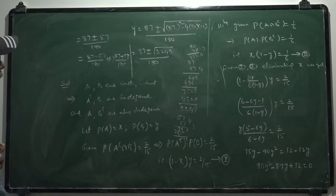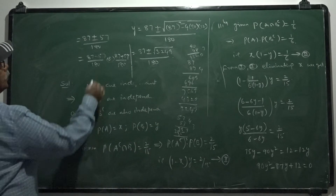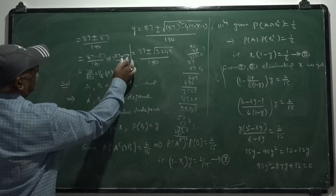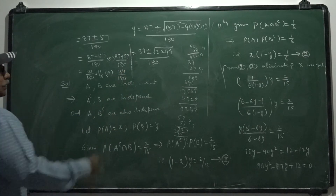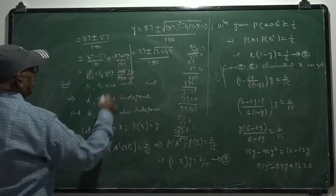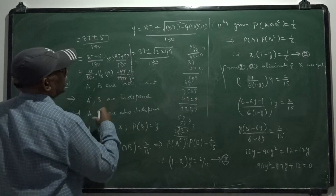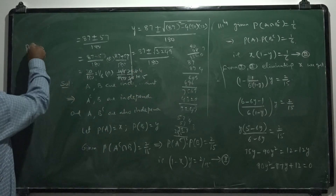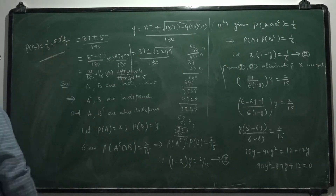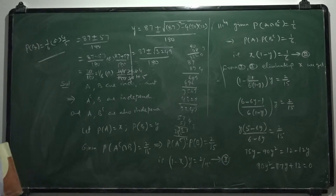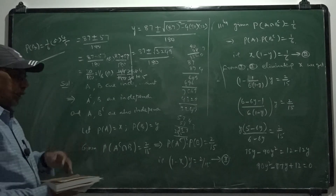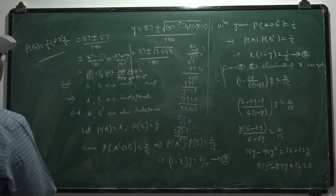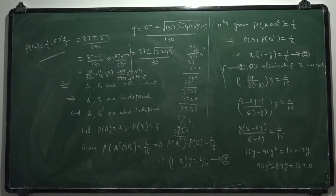Either minus or plus may be valid here because it is a quadratic, giving two values: P of B equals 1 by 6 or 4 by 5. So the required probability is obtained by solving this quadratic, and it may take two values — multiple options are possible here.